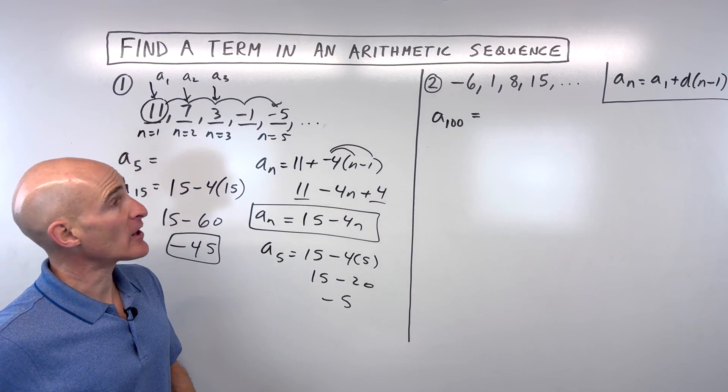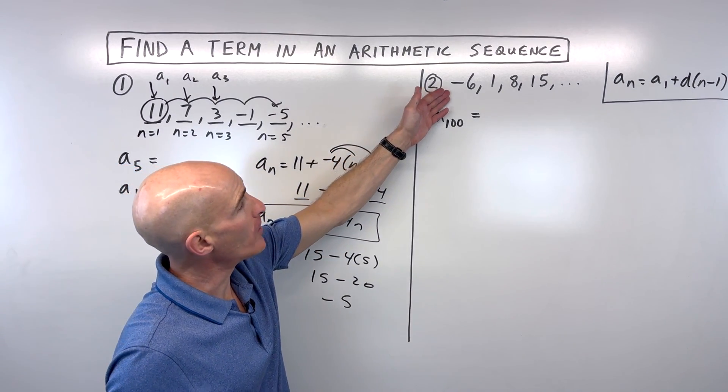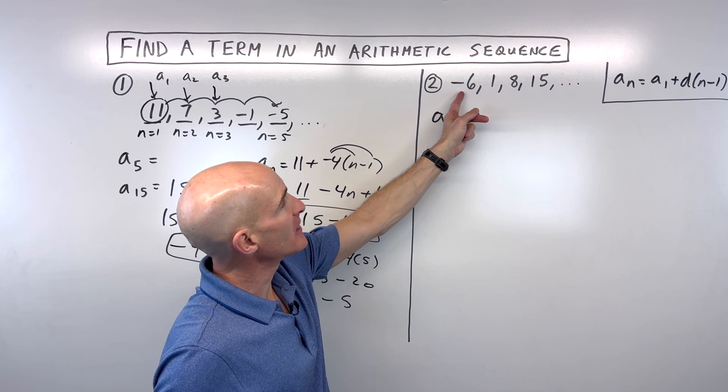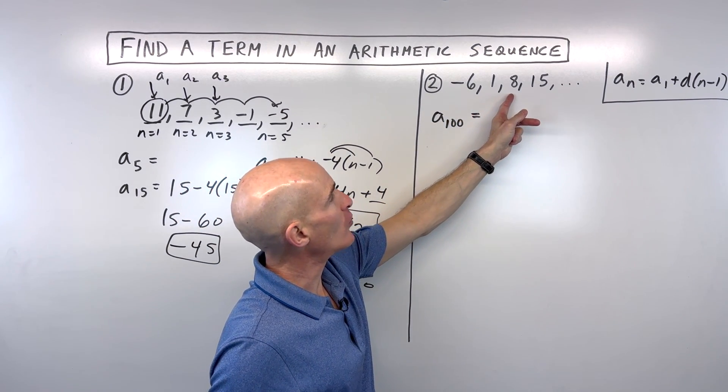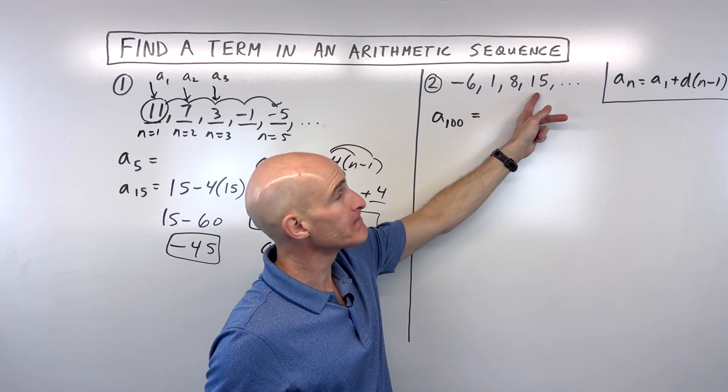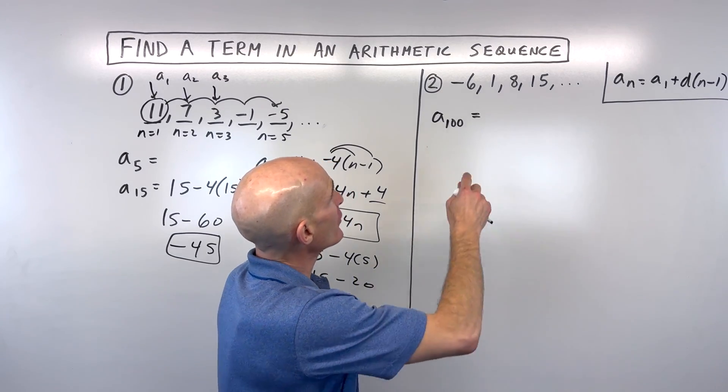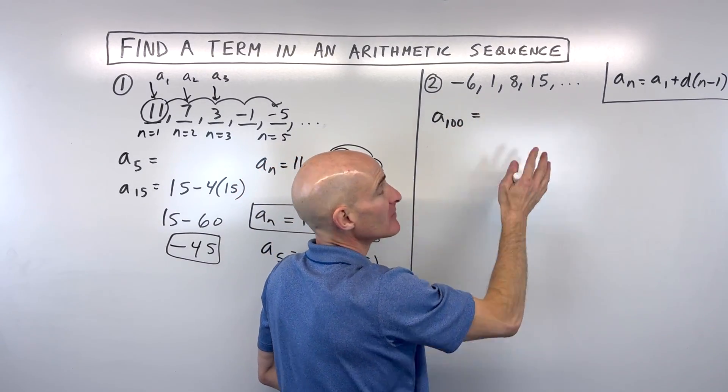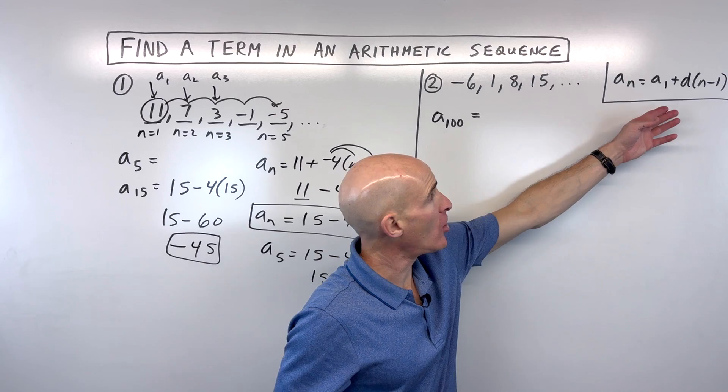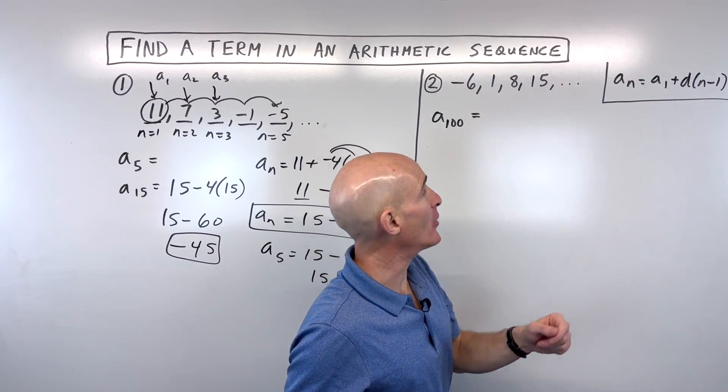Let's take a look at another example. If you want to try this one, go ahead and try it on your own. What's the pattern here? How are we getting from negative 6 to 1 or 1 to 8 or 8 to 15? Well, if you said that we're adding 7 each time, you're exactly right.